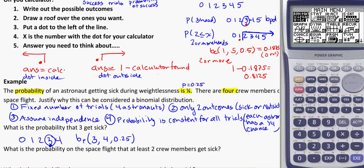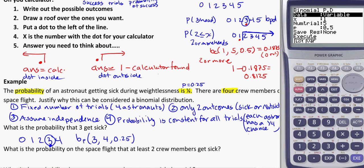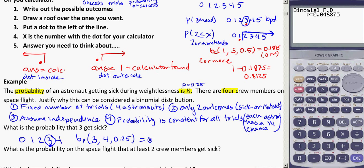Go into my calculator, into stat, distributions, binomial, precise. Here I'm going to have exactly three astronauts getting sick out of four total, the probability of 0.25 for each of them, and calculate it. So the probability here is 0.0469. Okay? And in this case, we're talking about our successes are getting sick.